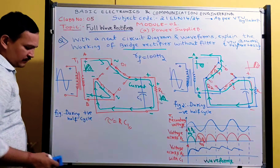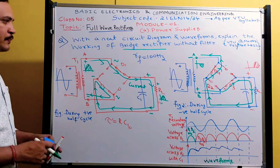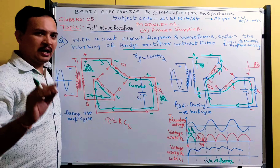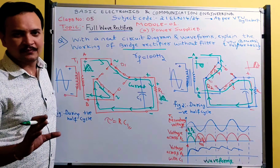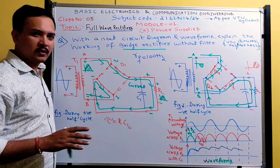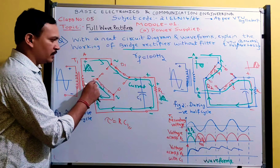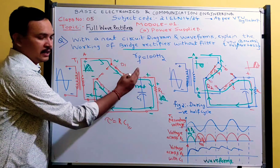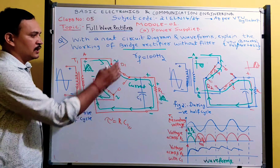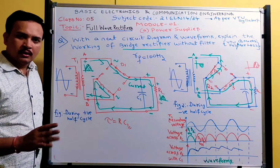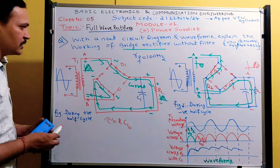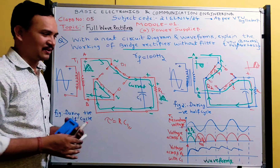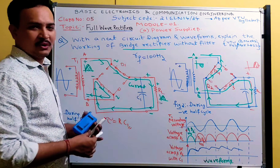This is sufficient to explain the bridge rectifier. Draw diagrams neatly. Remember the key concept: connect anodes at one point, cathodes at another point, and connect diodes in series between them. Right side is odd-numbered diodes, left side is even-numbered diodes, with a difference of 2 between adjacent numbers. Following this logic correctly ensures you don't lose marks.